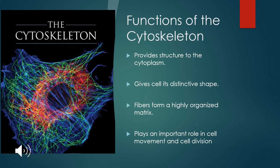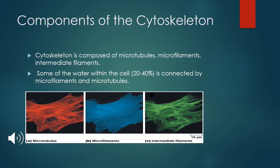The cytoskeleton is defined as an intricate, organized, three-dimensional array of interconnected proteinaceous structures. It provides structure to the cytoplasm and gives the cell its distinctive shape, forming a highly organized matrix. In addition, the cytoskeleton plays an important role in cell movement and cell division. The three major structural elements of the cytoskeleton are microtubules, microfilaments, and intermediate filaments. It has been estimated that as much as 20 to 40% of the water in the cytosol might be bound to the microfilaments and microtubules of the cytoskeleton.